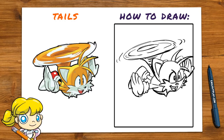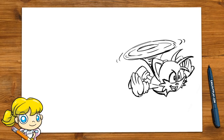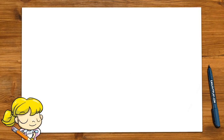And there he is — there's Tails! Great job, you guys. For coloring you just need a couple of colors: a yellowish-orange (yellow, and orange to make it darker in some spots), red, and a little black for his nose. Then red for his mouth and his shoes.